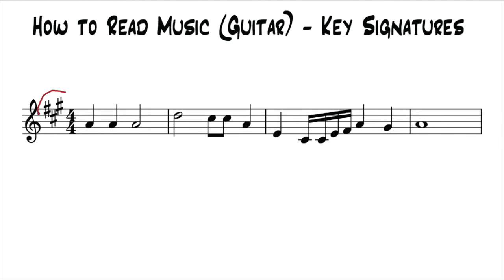There are rules about how the key signature is written, what lines and spaces are written on, which ones come first and all that. We're going to dive into that in a couple lessons coming up. But for now, just realize that when you see one of these, it's representing a key signature, which means this piece of music is in a specific key.